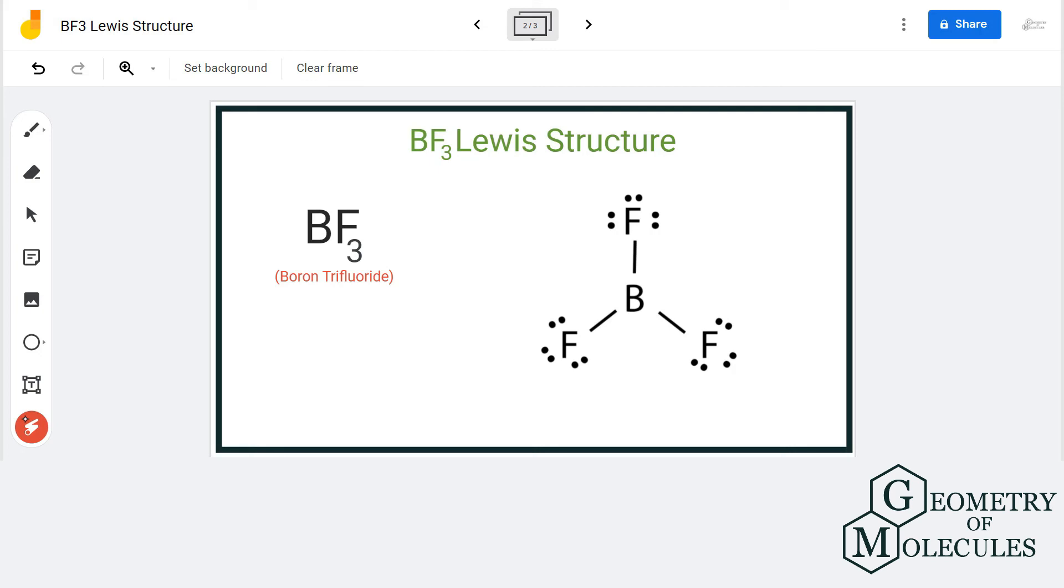If you check the formal charges, you will find that the charges on boron and fluorine atoms are zero. Hence, this is the most stable Lewis structure for BF3.